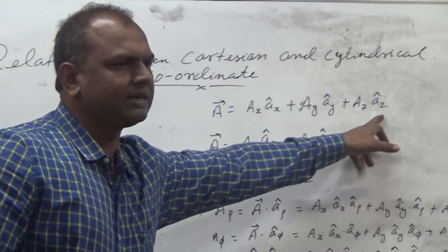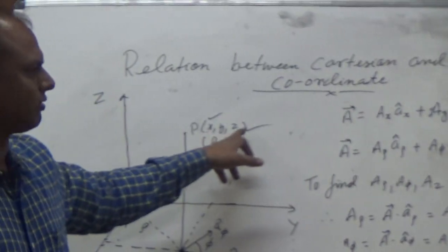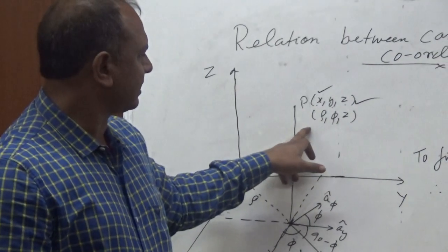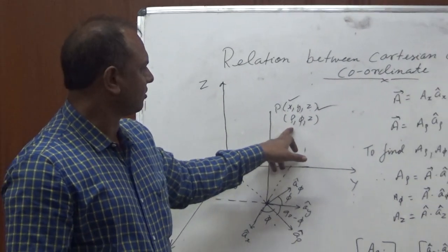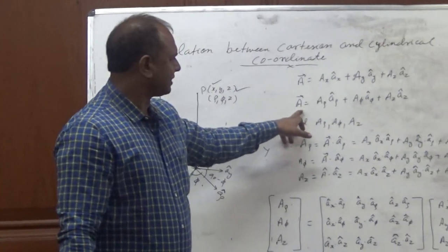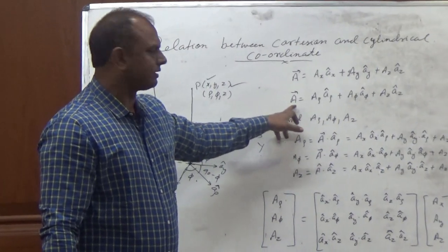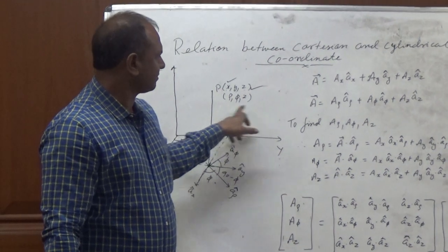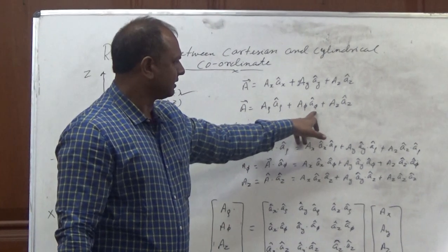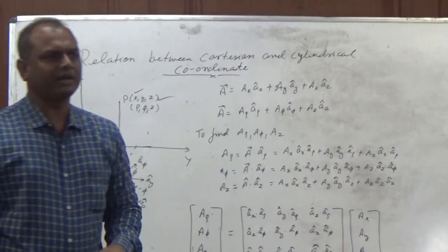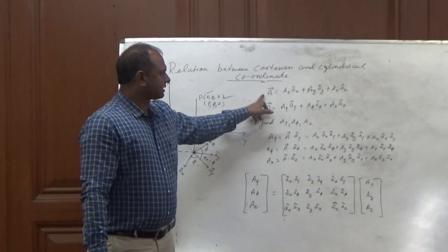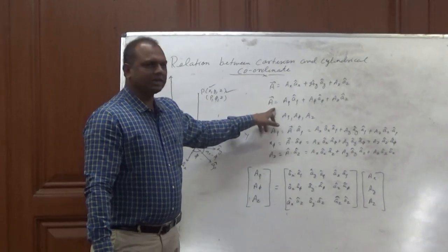In cylindrical coordinate system, the axes are Rho, Phi, and Z. We can represent any point as A with unit vectors A-rho, A-phi, and AZ. Now we have to convert the Cartesian system into cylindrical system.